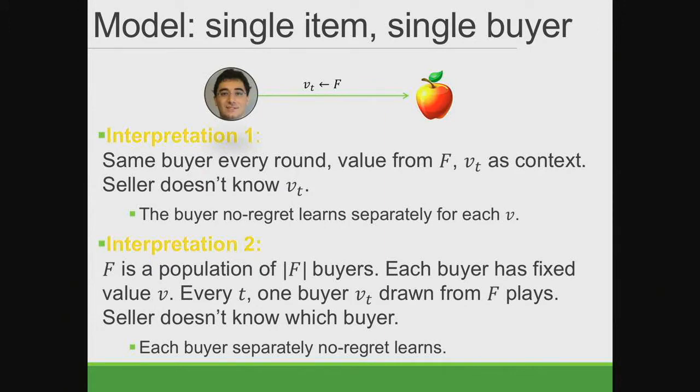There are two interpretations of this model. The first: there is only one buyer, and each round the value is drawn independently from some distribution; the seller knows the distribution but not the realized value, and the buyer tries to learn no-regret separately for each value. The second interpretation: there's a collection of buyers, each with a fixed value, and in each round only one participates in the auction. The seller doesn't know which buyer comes, and each buyer separately learns with no-regret. You can pick your favorite interpretation.